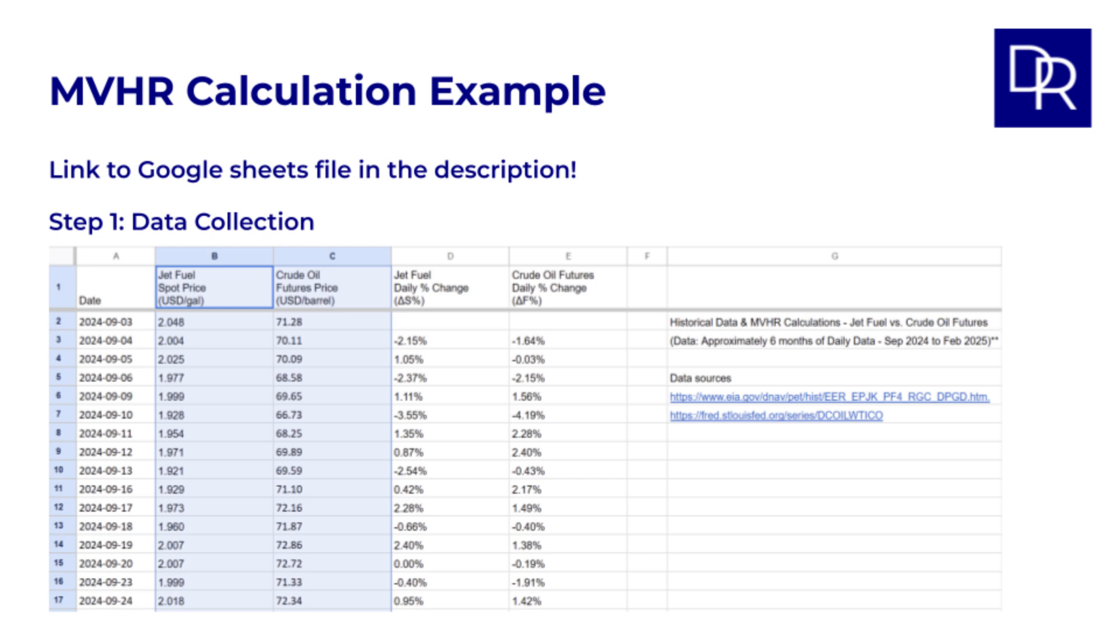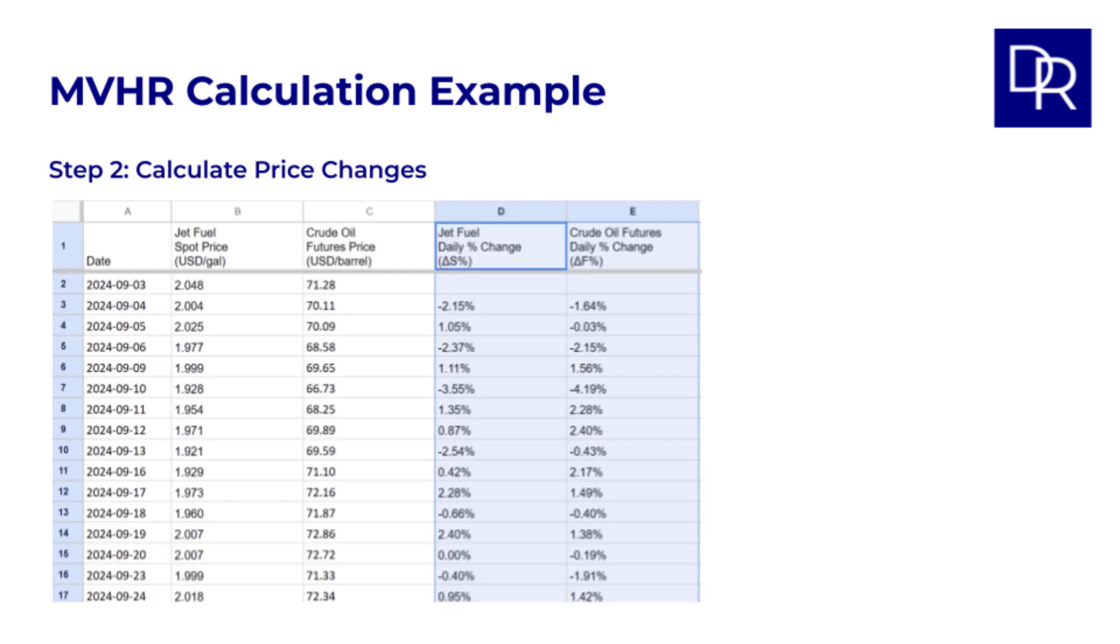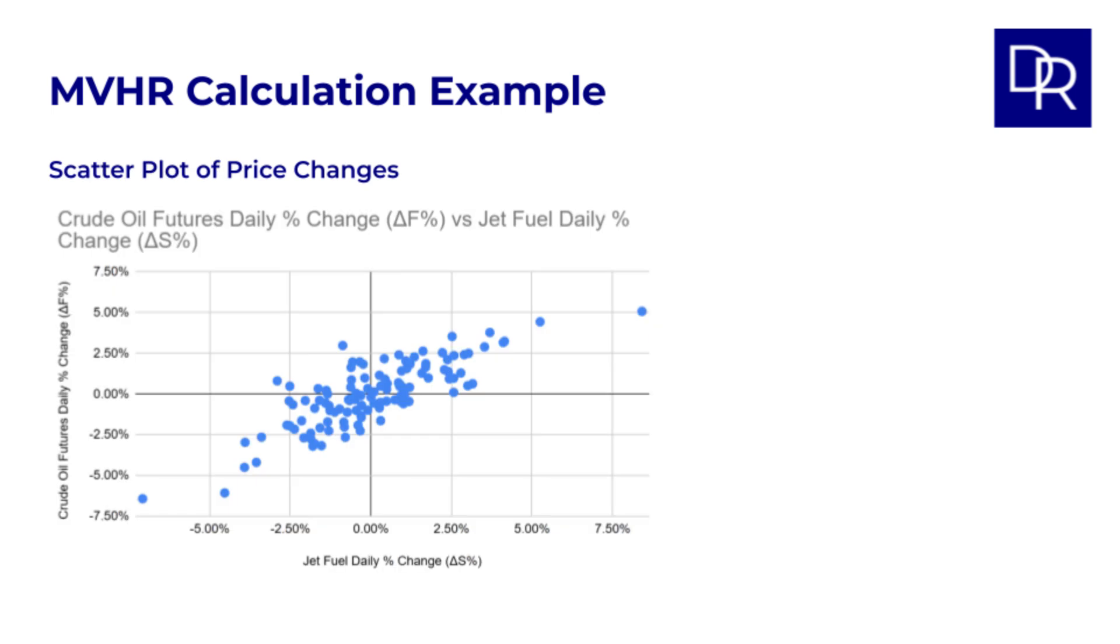There are links to the data in the spreadsheet. In the Google Sheets file, the price data is in the data tab in columns B and C. Step two. Calculate the price changes. For each day, we find a difference in price from the previous day. We use percentage changes rather than just the differences. This will be more robust and economically meaningful. And here is a scatter plot of the price changes. This shows that it does indeed seem to be a relationship between spot changes and futures price changes. That is pretty close to a straight line. This graph is in the spreadsheet in the graph tab.